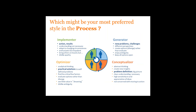People who prefer different parts of the process are called generators, conceptualizers, optimizers, and implementers. New problems and challenges — some people love them. Conceptualizers are not satisfied until they understand the problem thoroughly. Optimizers are determined to get a good practical solution. And implementers are going to do what it takes to get action and results. Remember, all of us are blends, but those are the extremes.